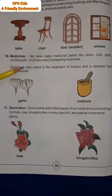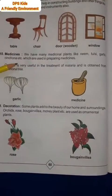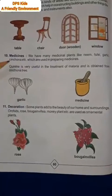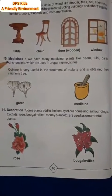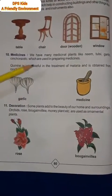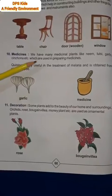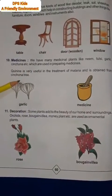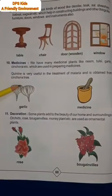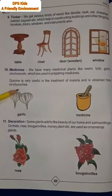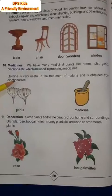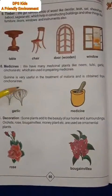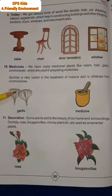Medicines — हमारे पास बहुत सारे medicinal plants हैं जैसे नीम, तुलसी, garlic यानि लहसुन, cinchona, etc., जो medicines बनाने में बहुत use किये जाते हैं। Quinine is very useful in the treatment of malaria and it is obtained from the cinchona tree — quinine जो होता है वो malaria के treatment में बहुत ज़्यादा useful होता है और यह cinchona नाम के एक tree से मिलता है।